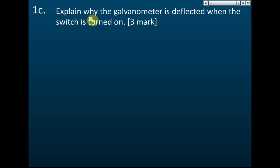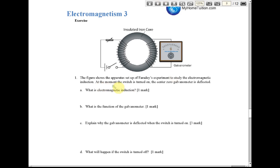Question 1C: Explain why the galvanometer is deflected when the switch is turned on. The apparatus uses an insulated iron core, so current cannot flow directly from one circuit to the other. The current in the secondary circuit is due to electromagnetic induction, which occurs when there is a change of magnetic flux.